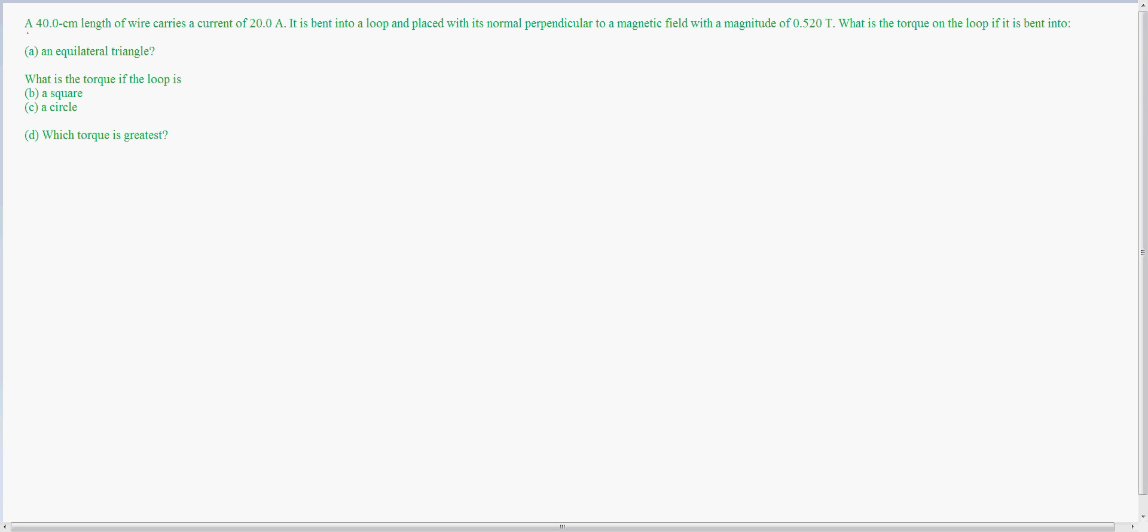My answer to this question is: A 40 centimeter length of wire carries a current of 20 amps. It is bent into a loop and placed with its normal perpendicular to the magnetic field with magnitude of 0.52 tesla.